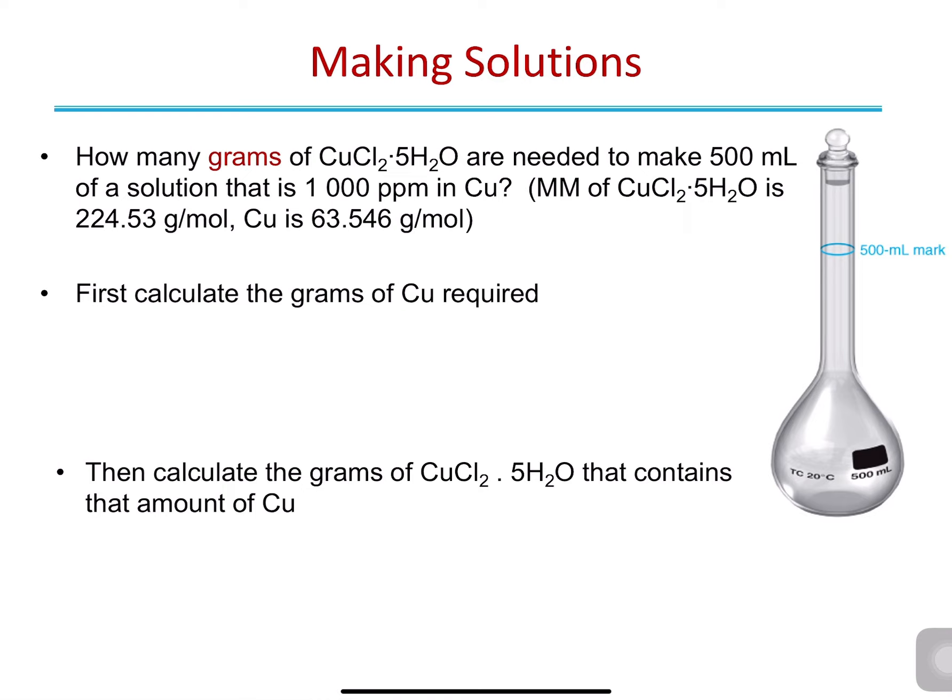Let's look at an example. The question asks: how many grams of copper chloride pentahydrate are needed to make 500 mL of a solution that is 1,000 parts per million concentration of copper? The molecular mass of copper chloride pentahydrate is 224.53 g/mol, and the atomic mass of copper is 63.546 g/mol. To answer this, we need two steps: first, calculate the grams of copper required for 1,000 ppm in 500 mL; then calculate the grams of copper chloride pentahydrate containing that amount of copper.